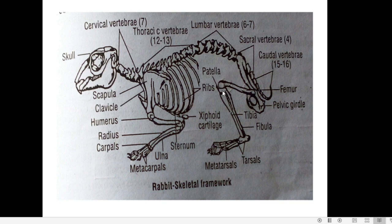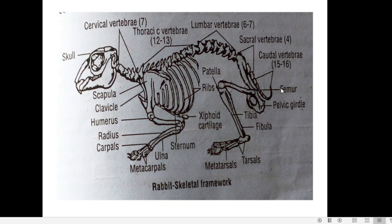The vertebral formula of rabbit is: C7, T12–13, L7, S4, Cd15–16. This means there are seven cervical vertebrae, 12 to 13 thoracic vertebrae, 6 to 7 lumbar vertebrae, four sacral vertebrae, and 15 to 16 caudal vertebrae.